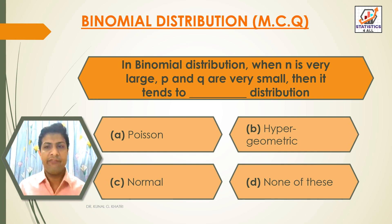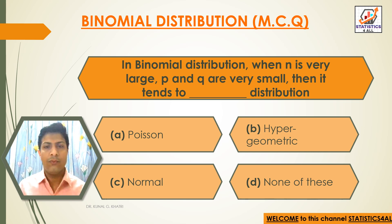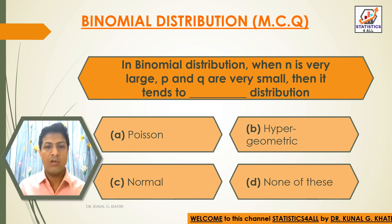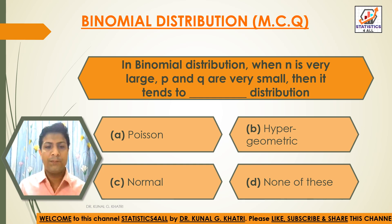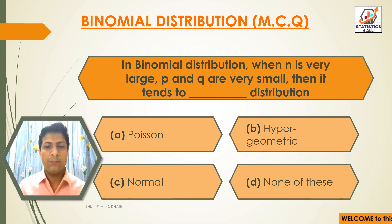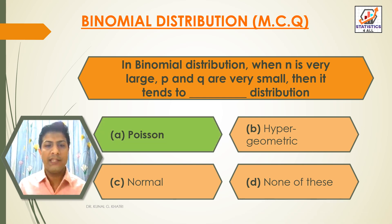Next question: In binomial distribution, when n is very large and p and q are very small, then it tends to dash distribution. Option A: Poisson distribution. Option B: Hyper geometric distribution. Option C: Normal distribution. Option D: None of these. The answer is option A — Poisson distribution.